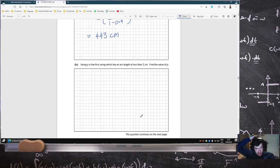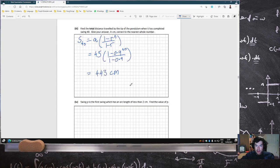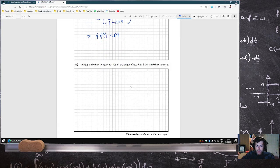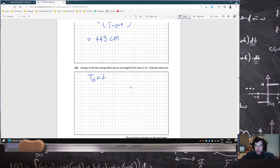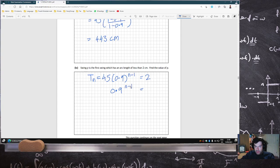P is the first swing which the arc length is less than 2 centimeters. So TN, which is your 45, 0.9 power N minus 1, that's equal to 2. 2 divided by 45, so you have 0.9 power N minus 1 equals 0.04 recurring.